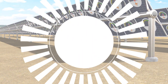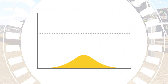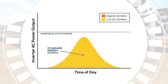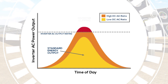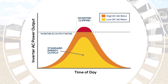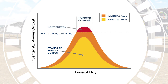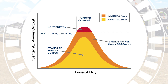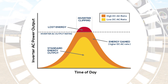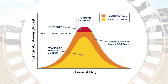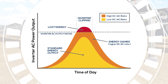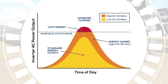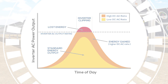Higher DC to AC ratios allow the system designer to widen production shoulders and to produce more energy for a given AC power line capacity limit. This is especially important where the PPA rate is high or there is a maximum AC power capacity limit in the transmission network.